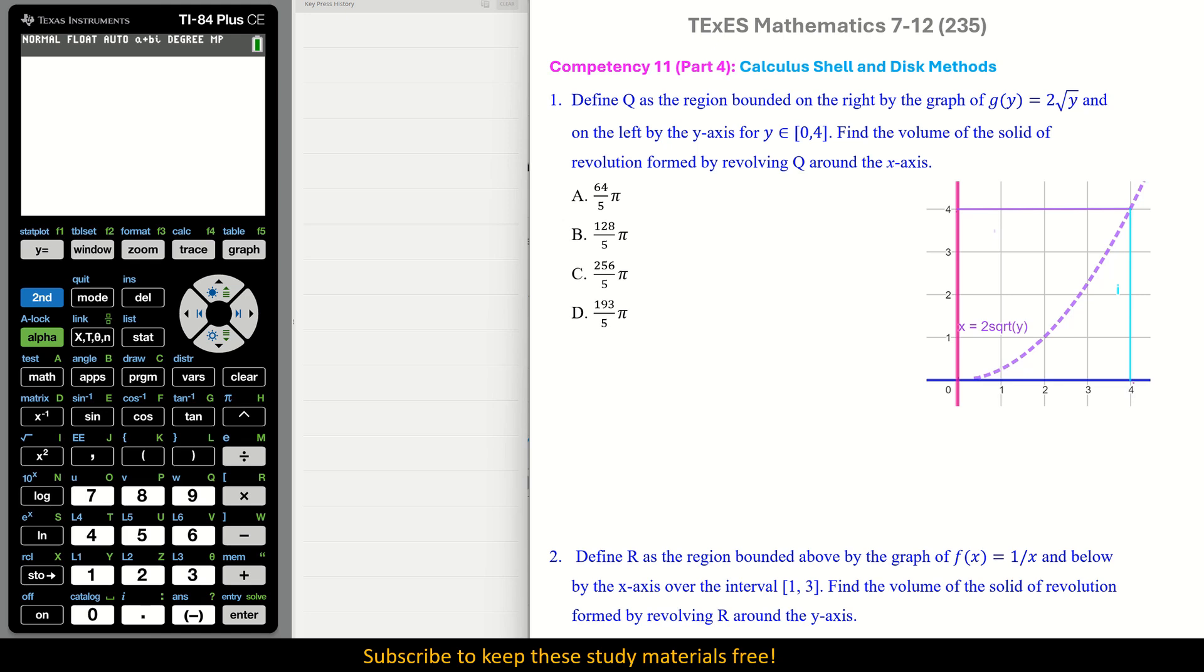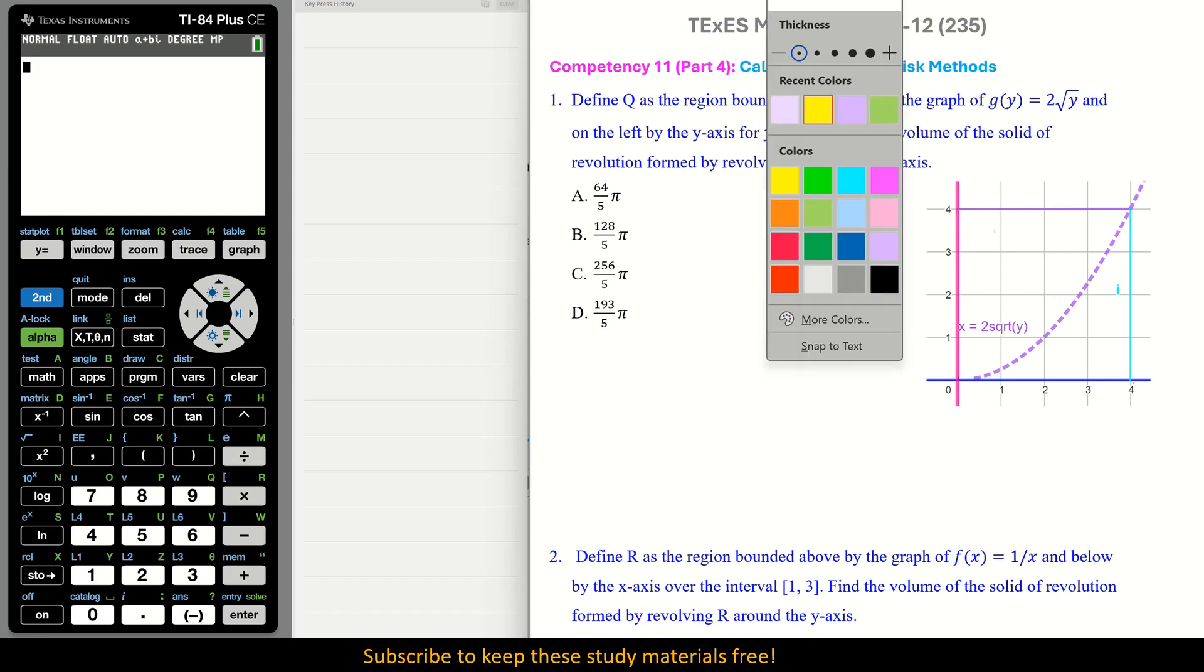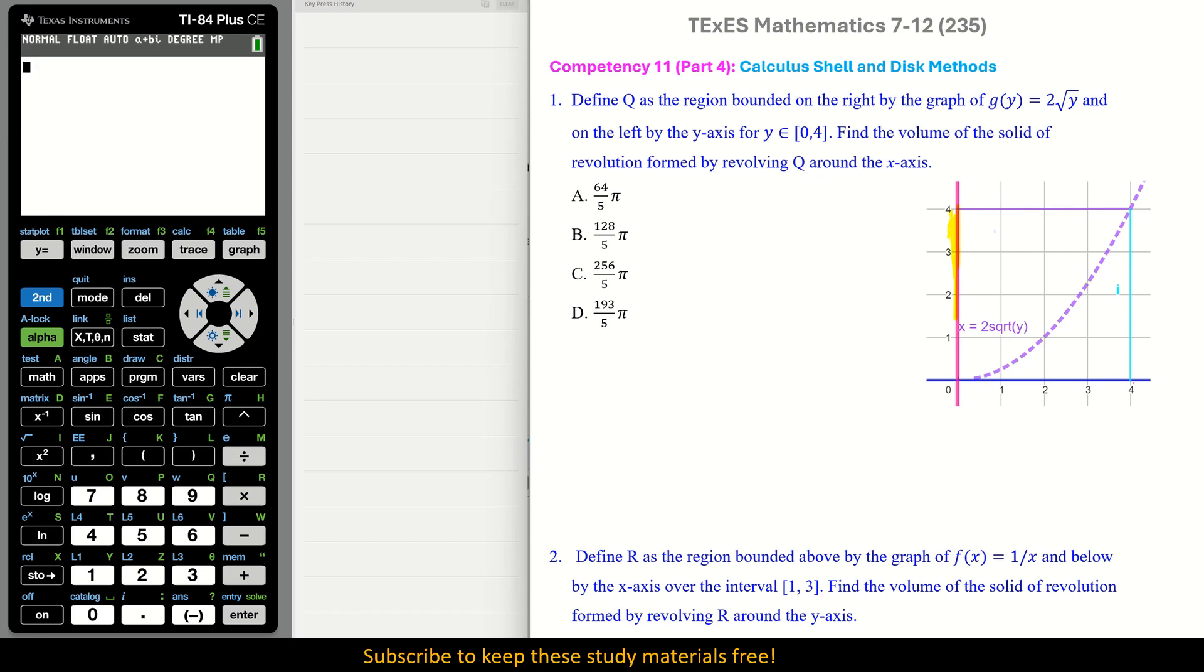Number 1. Define Q as the region bounded on the right by the graph g of y equals 2 square roots of y, and on the left by the y-axis for y in the interval 0 to 4. Let's do a little highlighting here. That means the y-axis is going to be like the bottom of this shape. Find the volume of the solid of revolution formed by revolving Q around the x-axis. So what are we doing here? We are going around this x-axis.